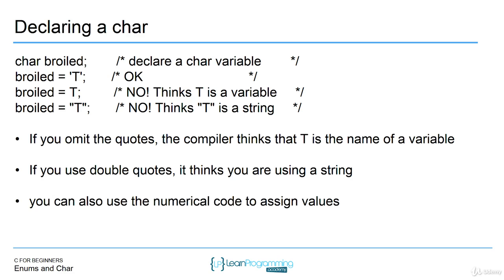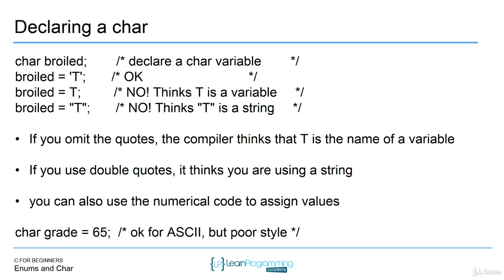You can also use numerical codes to assign values for characters, using the ASCII table. The ASCII table is how characters are represented as numbers in the computer. If you assign a number to a character type, it's going to treat it as an ASCII value — so assigning 65 to grade will look up 65 in the ASCII table and use the equivalent character. These numbers get converted to single characters based on what they are in the ASCII table.